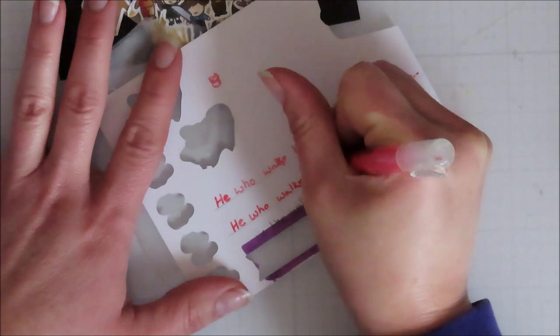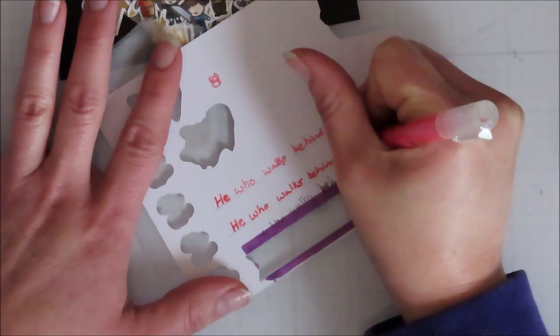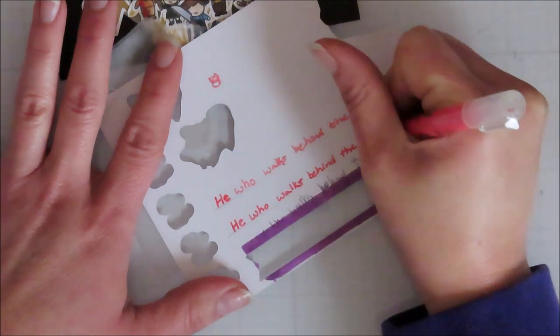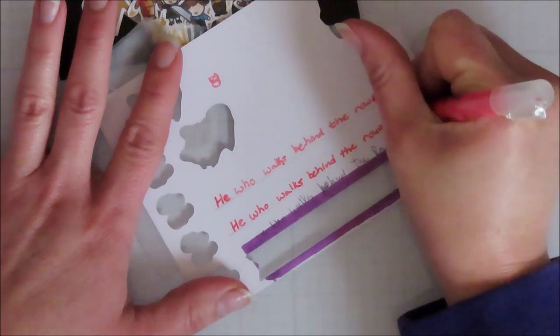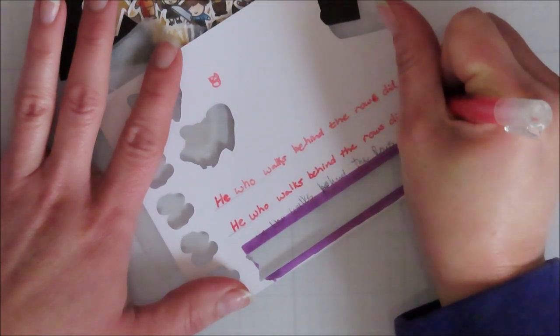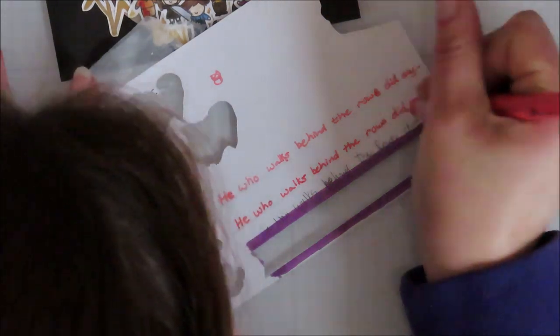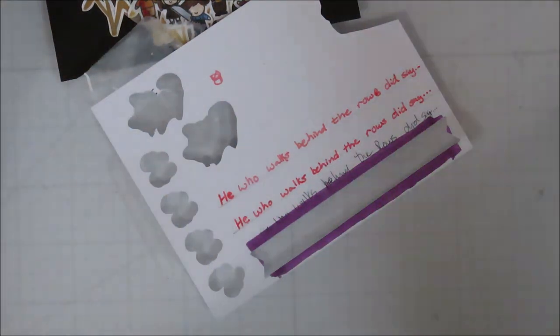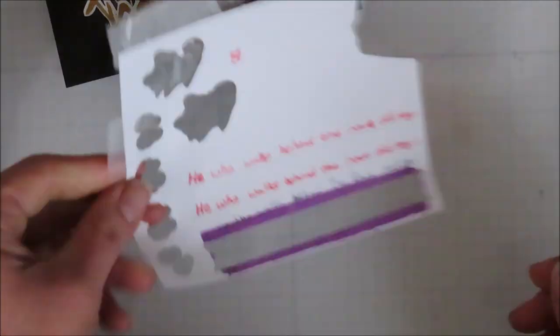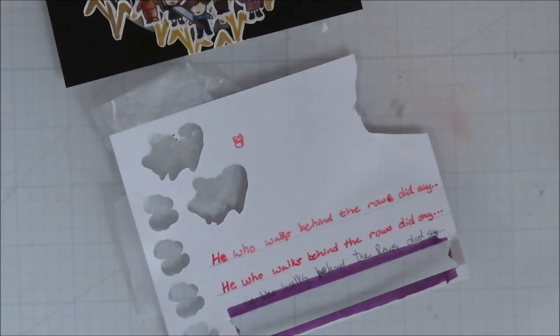So I did do a little bit of research on this one to see what some of the better known quotes were from the movie. So that's how I got the he who walks behind the corn did say. And then I figured my inside sentiment. I was planning on doing a Happy Halloween because this essentially was a Halloween style card. But being that they're kids in a cornfield with knives and stuff, I had to switch my inside sentiment up.